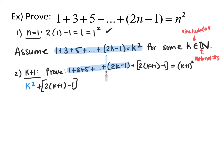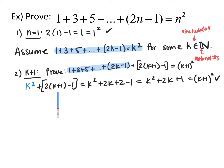I replace the entire sum 1 plus 3 plus 5 plus ... plus 2k minus 1 with k squared from our assumption. Now I have k squared plus 2 times the quantity k plus 1 minus 1, and I want to prove that simplifies to k plus 1 quantity squared. Doing some algebra — foiling — you get k squared plus 2k plus 2 minus 1, which simplifies to k squared plus 2k plus 1, which factors into k plus 1 quantity squared. That's what we wanted to prove — it's true for k plus 1.